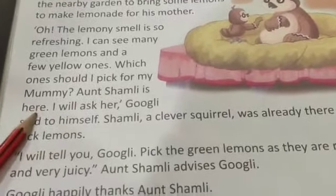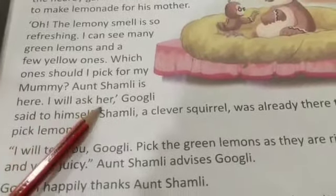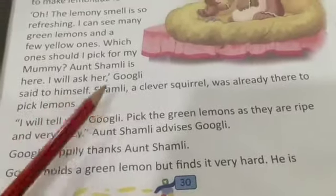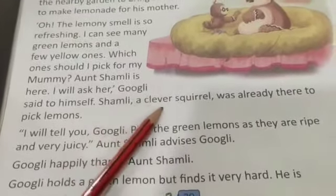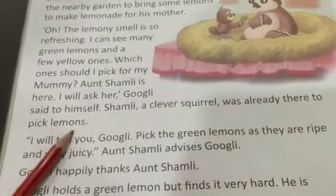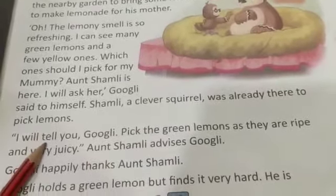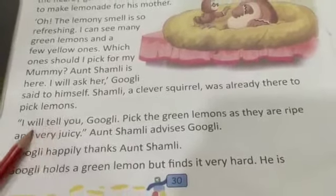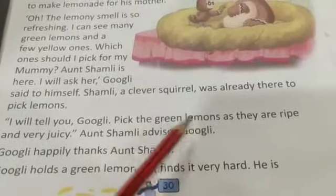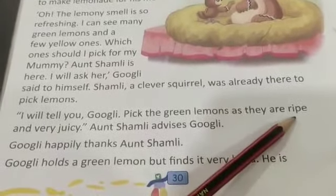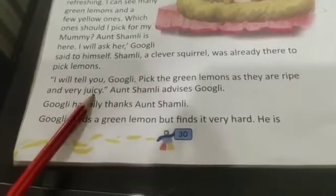Aunt Shamli is here — mein usse puchunga, Googly said to himself. Shamli, a clever squirrel, was already there to pick lemons. Aunt Shamli said: 'I will tell you, Googly — pick the green lemons, as they are ripe and very juicy.' Aunt Shamli ne Googly ko advise kiya ke green lemons lo kyunki woh pakke hue aur juicy hain.